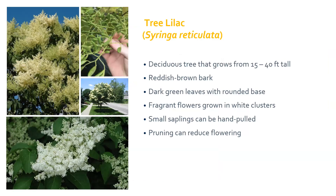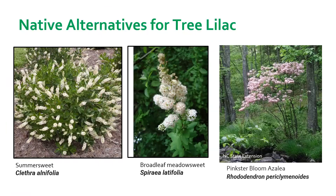Tree lilac is a non-native tree that is starting to be thought of as invasive and is commonly found growing in urban areas along streets. It can grow to be about 40 feet tall. It has reddish-brown cherry tree-like bark with dark green leaves similar to lilac bushes. It has small fragrant flowers that grow in large white clusters in the spring, usually around the beginning of June, and they only last a few weeks. Small saplings can be hand-pulled and larger trees are harder to manage — pruning them can help reduce their flowering. Some native alternatives are summer sweet, broadleaf meadowsweet, and native azaleas. Although common lilacs are not native, they are not invasive and could also be a good alternative. All have very beautiful fragrant blooms and attract pollinators.